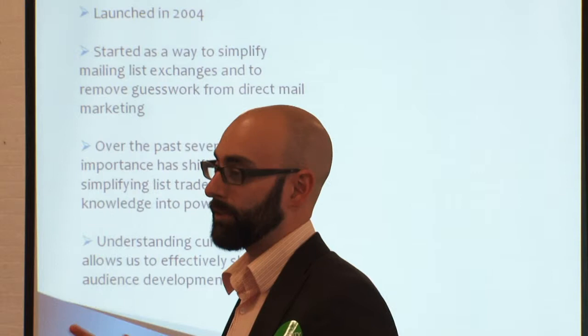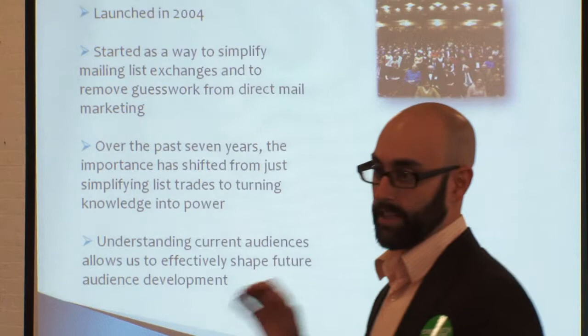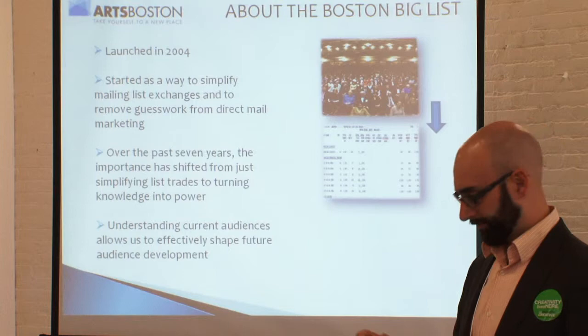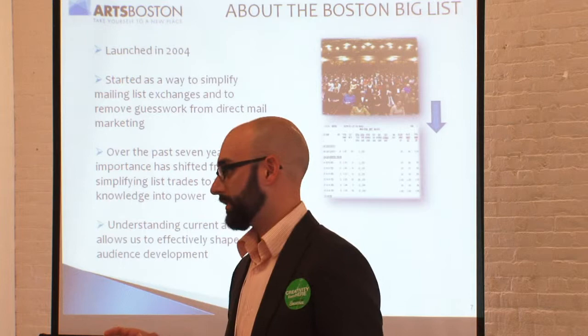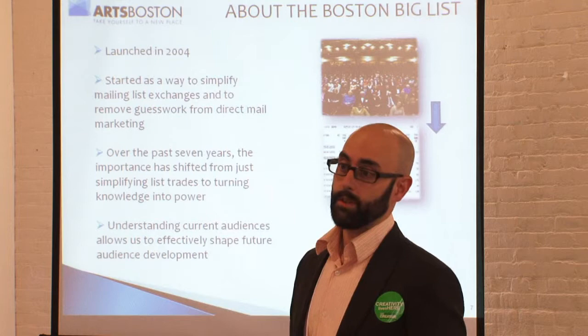Here's what it is: we take patron data — specifically in 2004 the Big List was just ticket buyers, so we take ticket buyers for the last three years and put them all into one giant database. In Boston we have 40 organizations participating; in the Berkshires we have 27. We merge it all into one database, purge the duplicates, identify people who show up on multiple lists, and send it through the National Change of Address four times a year. What we're left with is one giant database of everybody who bought tickets in the region. In Boston in 2004, the first year, we ended up with 250,000 unique households of ticket buyers.